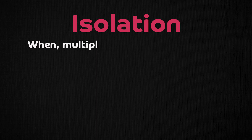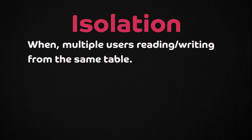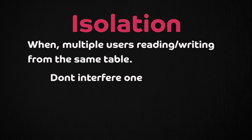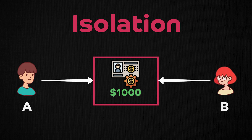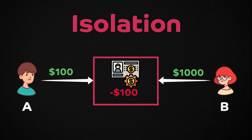Isolation applies when multiple users are reading and writing from the same table all at once. Isolation of their transactions ensures that all these concurrent transactions don't interfere or affect one another. So if you have an account with $1,000, and two persons A and B are trying to access that account and withdraw money at the same time — let's say $100 and $1,000 — the cumulative effect could be that the total amount is reduced to negative $100. Isolation prevents that from happening, ensuring that concurrent transactions produce the same result as if they were run sequentially.